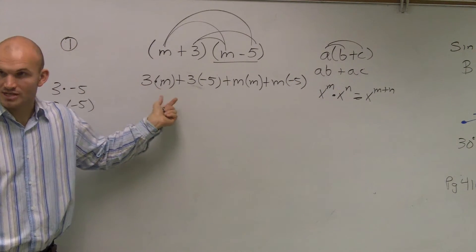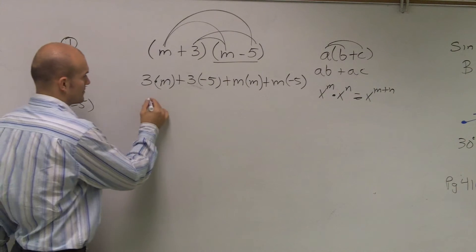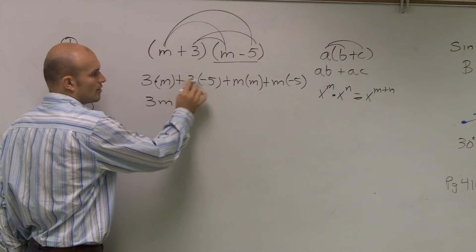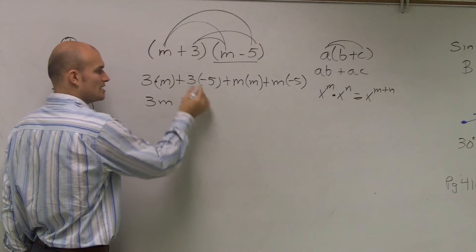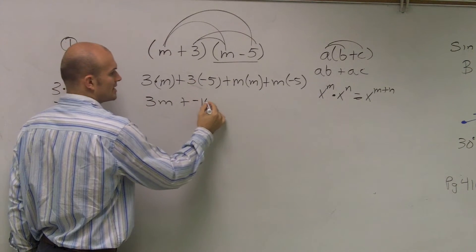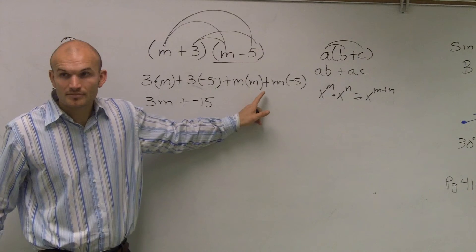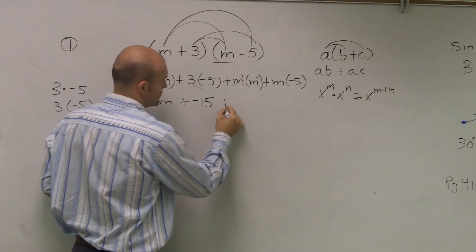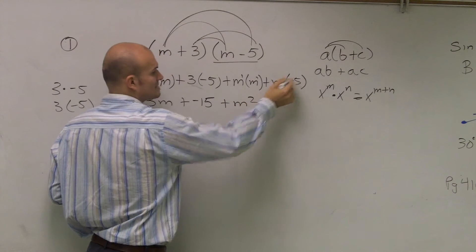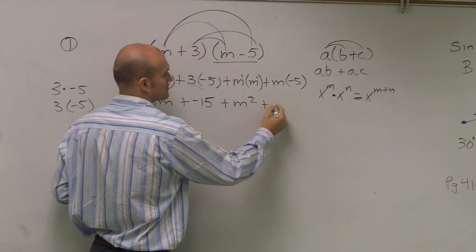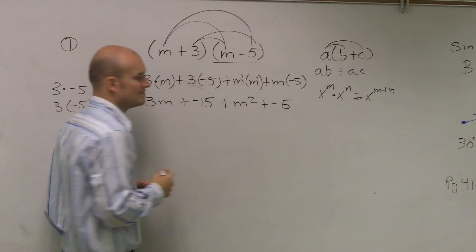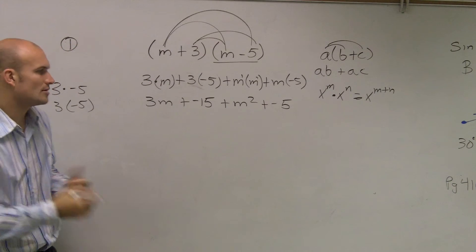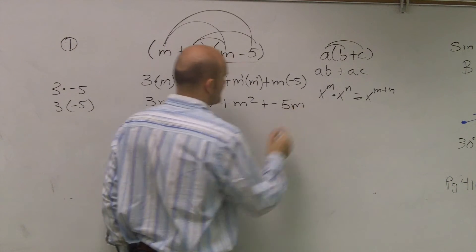So now let's go through it. A number times a variable is just a number times a variable: 3M. A number times a number is obviously a number. Three times negative five is negative 15. M times M, they both have an exponent of one, equals M squared. M times negative five is negative five M.